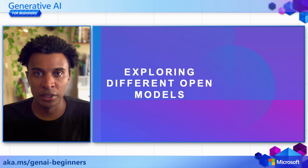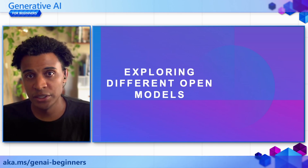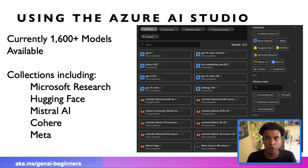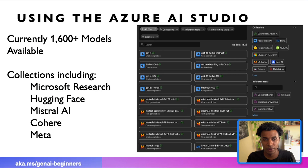Exploring different open models is an important question to answer, as there are many available. One way to work with this is using Azure AI Studio, which has a model catalog currently with 1,600-plus models — and models continue to be added almost every week. The collection includes Microsoft Research models such as Phi small language models, Hugging Face models, Mistral models, as well as Cohere and Meta models. Check it out and you'll definitely find the models most appropriate for your application.